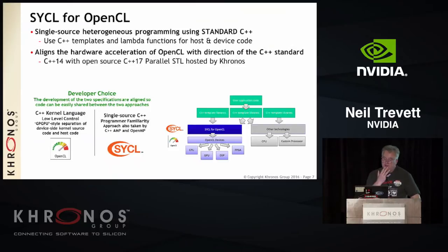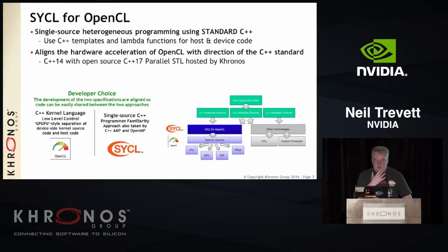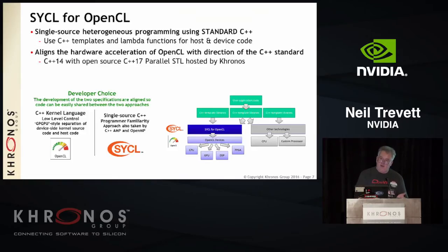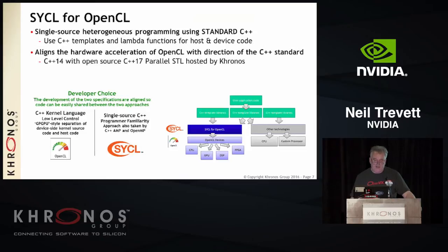SYCL for OpenCL is a single-source programming framework based on C++14. It's the main attach point we have to the world of standard C++ in ISO. The ISO community is trying to figure out how to bring parallel programming into standard C++, and we're trying to converge rather than diverge those efforts. SYCL is really the main vector we have to engage and converge with the broader C++ community.